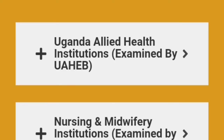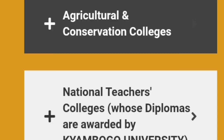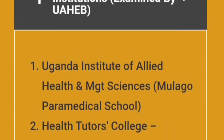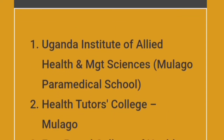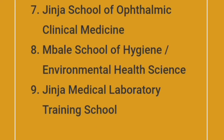Now let's look at the tertiary institutions which are recommended. These include: Uganda Allied Health institutions, Nursing and Midwifery, Agriculture and Conservation Colleges, National Teachers Colleges, and Technical Colleges. For Allied Health, accepted institutions include Uganda Institute of Allied Health Management, Health Tutors College, Fort Portal College of Health Science, Gulu College of Health Science, Butabika College of Health Science, Mulago School of Psychiatric Clinical Medicine, Jinja School of Ophthalmic Clinical Medicine, Butabika School of Hygiene, and Jinja Medical Training College.